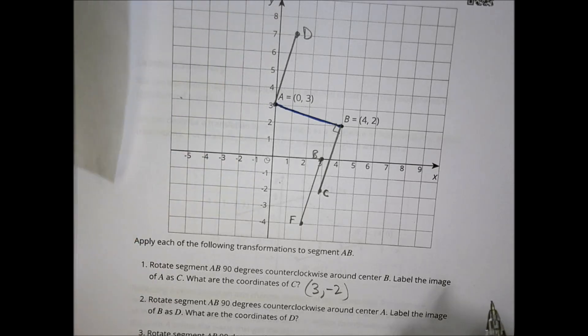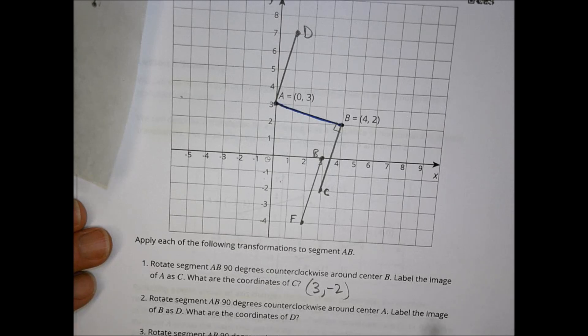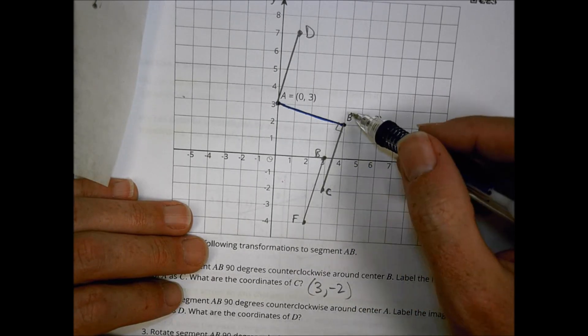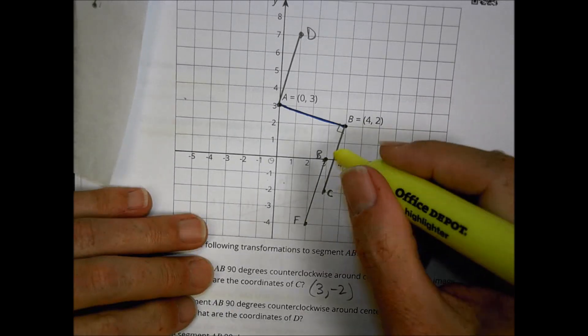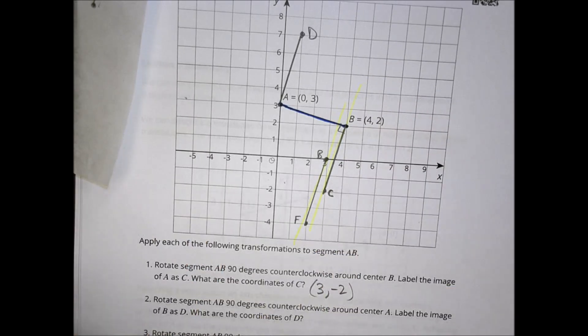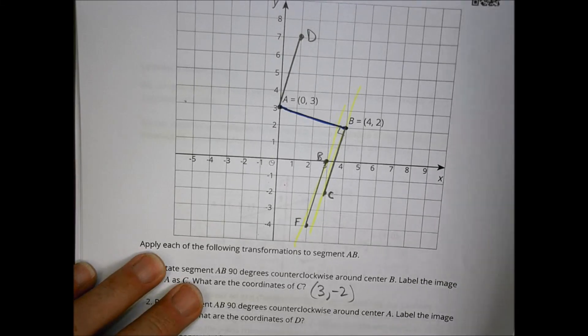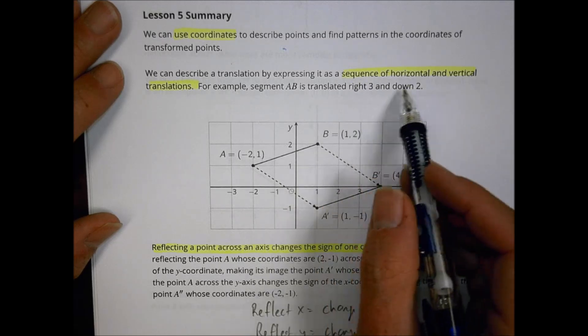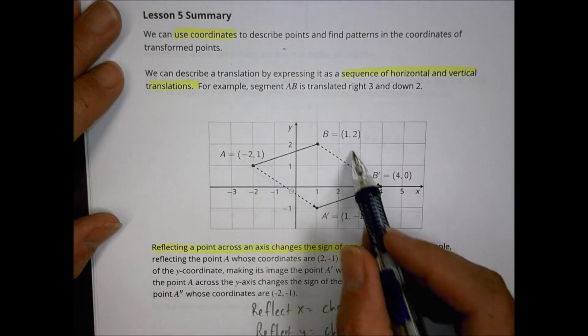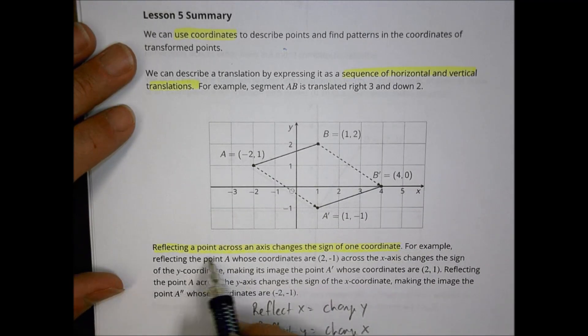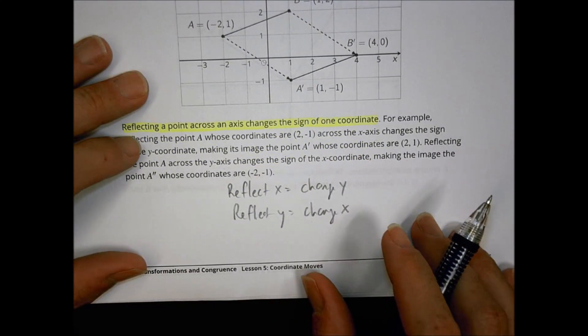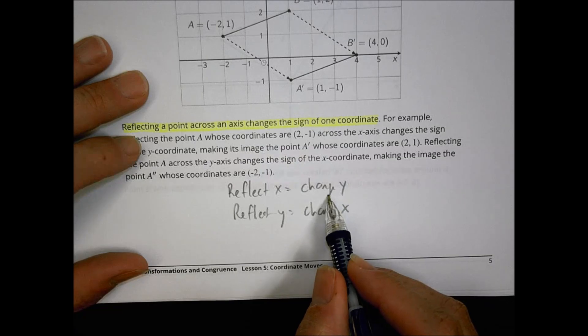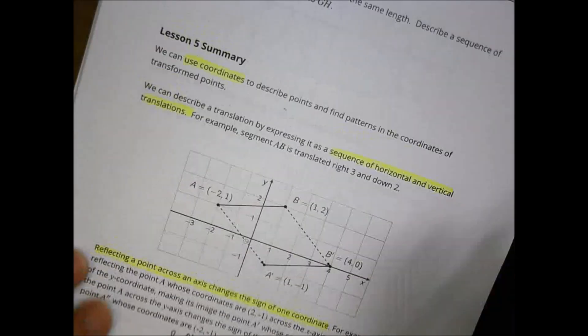Comparing the two 90-degree rotations: the segments end up in different places, but they run in the same direction — like parallel lines. That's a key result of 90-degree rotation. To summarize today: we use coordinates to describe translations (horizontal and vertical shifts), and when we reflect across an axis, the sign of one coordinate changes. Reflect across x → y changes; reflect across y → x changes.